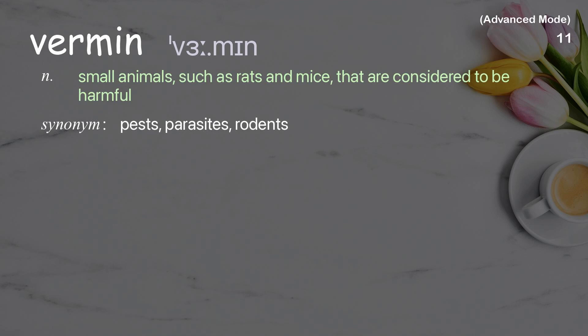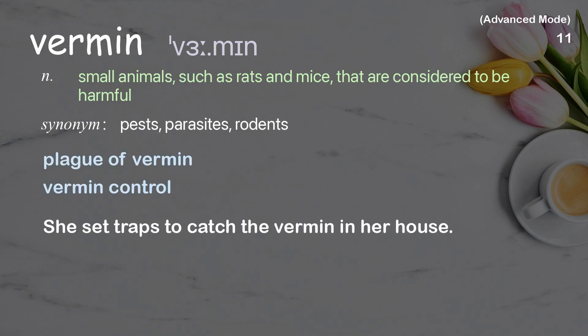Vermin: small animals, such as rats and mice, that are considered to be harmful. Examples: plague of vermin, vermin control. She set traps to catch the vermin in her house.